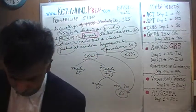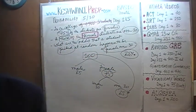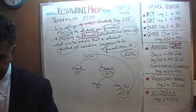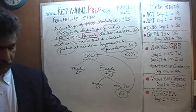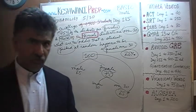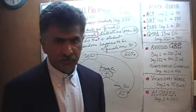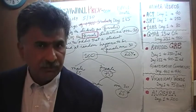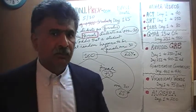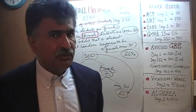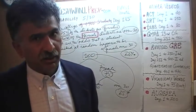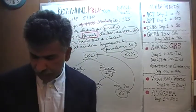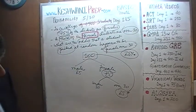Let's do one more problem. The next problem is also a probability problem, but it involves the use of a Venn diagram. Let's take a look at it — just give me one second so I can get out of your way.